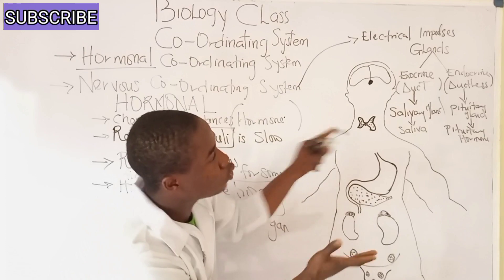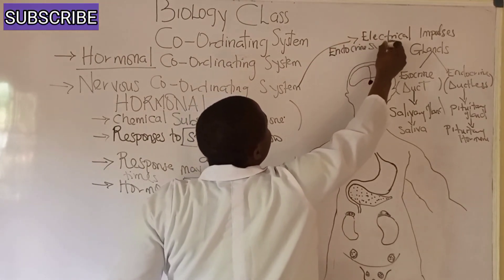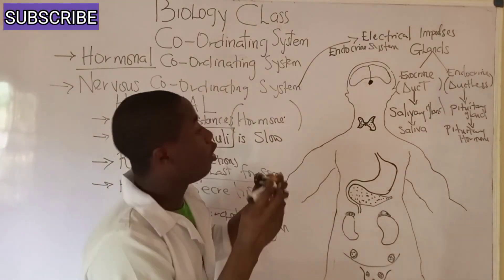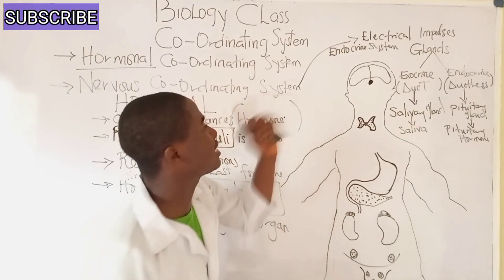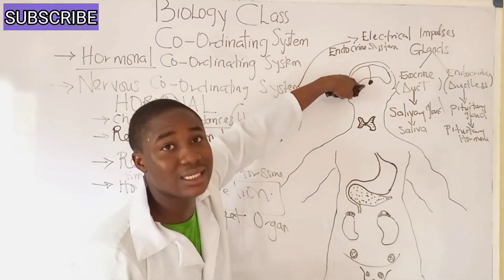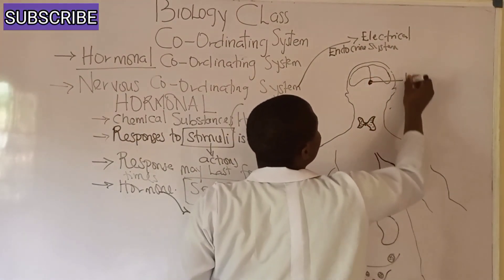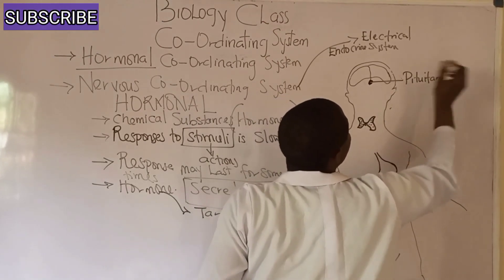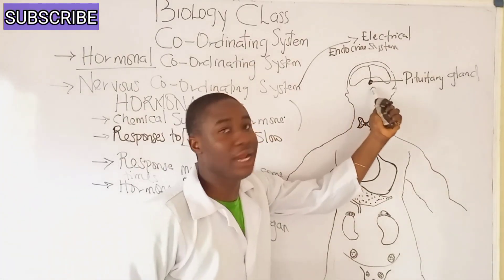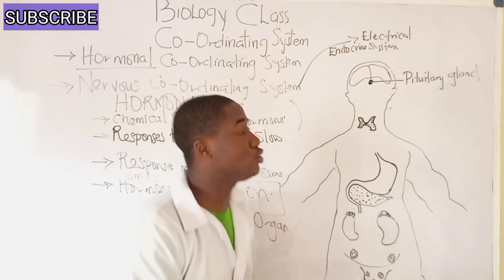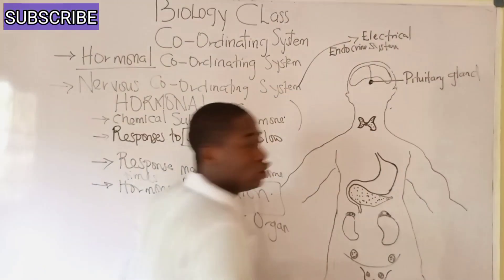You can see this diagram of the endocrine system. I will be labeling all of these organs in the body and studying their functions and importance. The first gland here is the pituitary gland. It must be noted that the pituitary gland is found at the base of the forebrain.